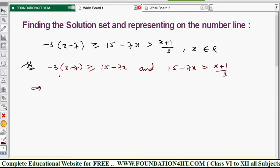From this, we will simplify the LHS for first inequality. That is minus 3x plus 21, greater than or equals to 15 minus 7x. And from this, you can take 3 to the left side.